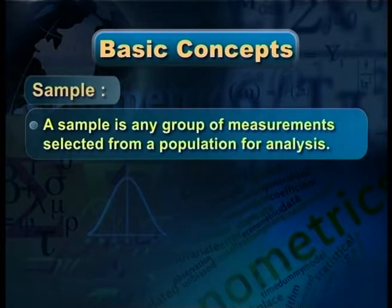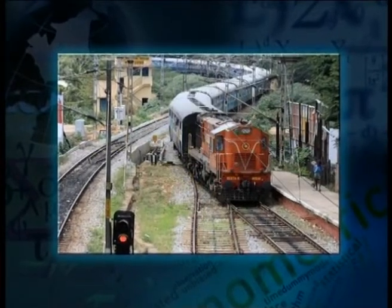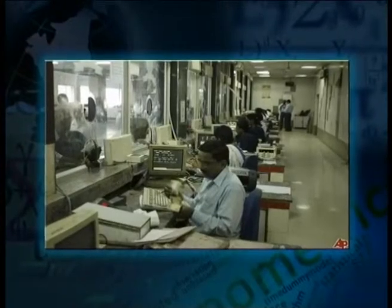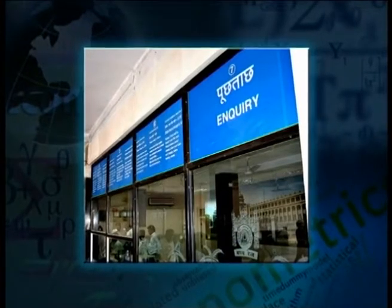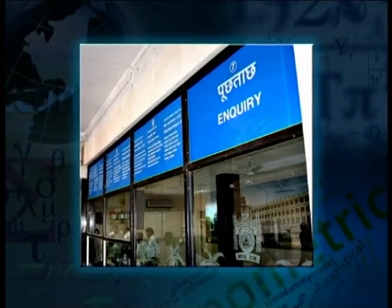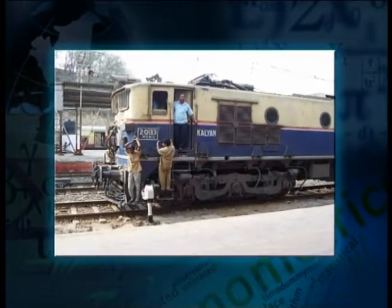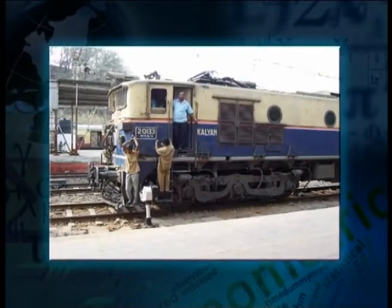Population means all the units covered under the study. Sample means instead of all the units, we pick up some units from the population. For example, in Indian railways there may be some 50,000 workers. But in a sample, we are not taking all 50,000 workers. We may pick up only 500 out of 50,000 as a sample. A sample is any group of measurements selected from a population for analysis.